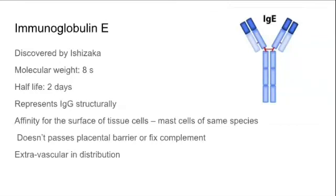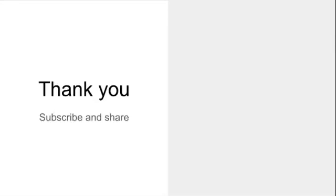IgE has an affinity for the surface of tissue cells, specifically mast cells of the same species, and is mostly present attached to mast cells. It does not pass the placental barrier and is extravascular in distribution. It resembles IgG structurally and has a half-life of 2 days. In summary, we have discussed what an antigen is, properties of antigen, what an antibody is, the structure of antibody, and the different types of immunoglobulins. Antigen-antibody reaction will be covered in the next video.